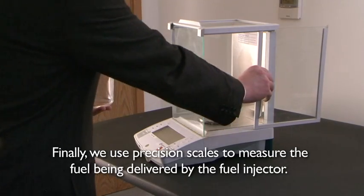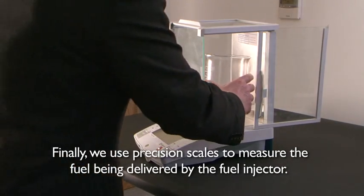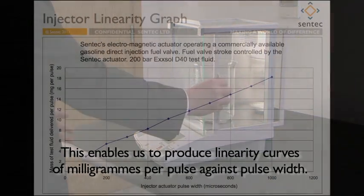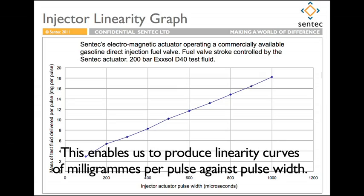Finally, we use precision scales to measure the fuel being delivered by the fuel injector. This enables us to produce linearity curves of milligrams per pulse against pulse width.